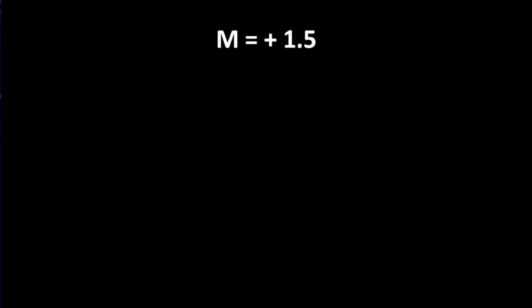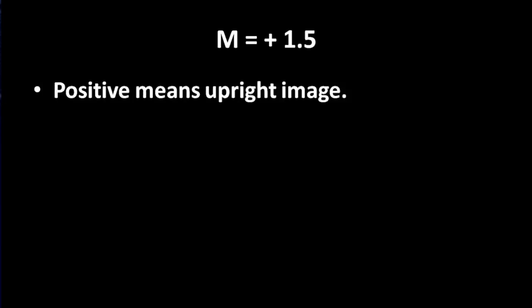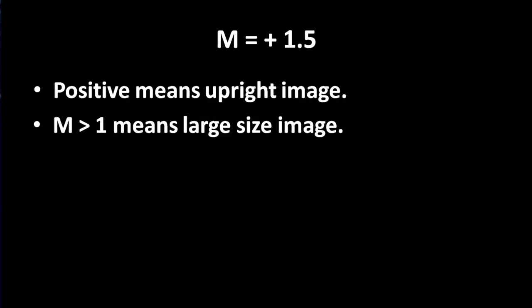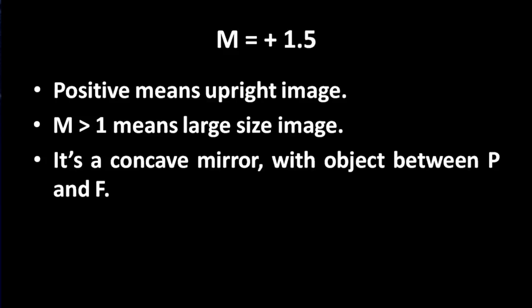What would happen if magnification is plus 1.5? Positive means upright image. 1.5 means magnification is greater than 1, so the size of image is larger than size of object. We get an upright image larger than the object only in case of a concave mirror when the object is kept between P and F. We also know that in such a case we get a virtual image.